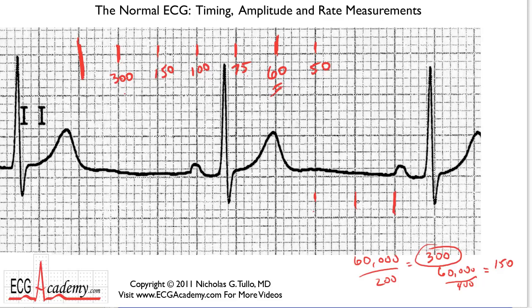What you do is start on a heavy line if you can, and then count in one direction or another looking for the next similar signal: 300, 150, 100, 75, 60, 50. You'll have to fudge it a little — if this is 60 and this is 50, then the heart rate must be just below 60, and you'd probably be okay to call it 58 beats per minute. That's a quick and easy way to figure out heart rate.